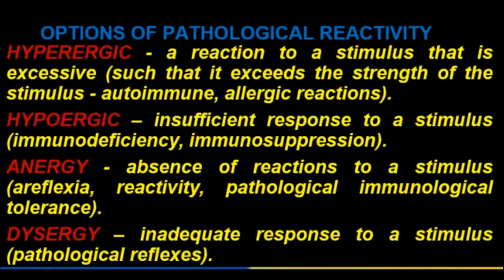Options of pathological reactivity: hyperergic reaction — an excessive response to a stimulus that exceeds the strength of the stimulus, such as autoimmune or allergic reactions. Hypoergic — insufficient response to a stimulus, such as immunodeficiency or immunosuppression. Anergy — absence of reaction to a stimulus, such as immunological tolerance.